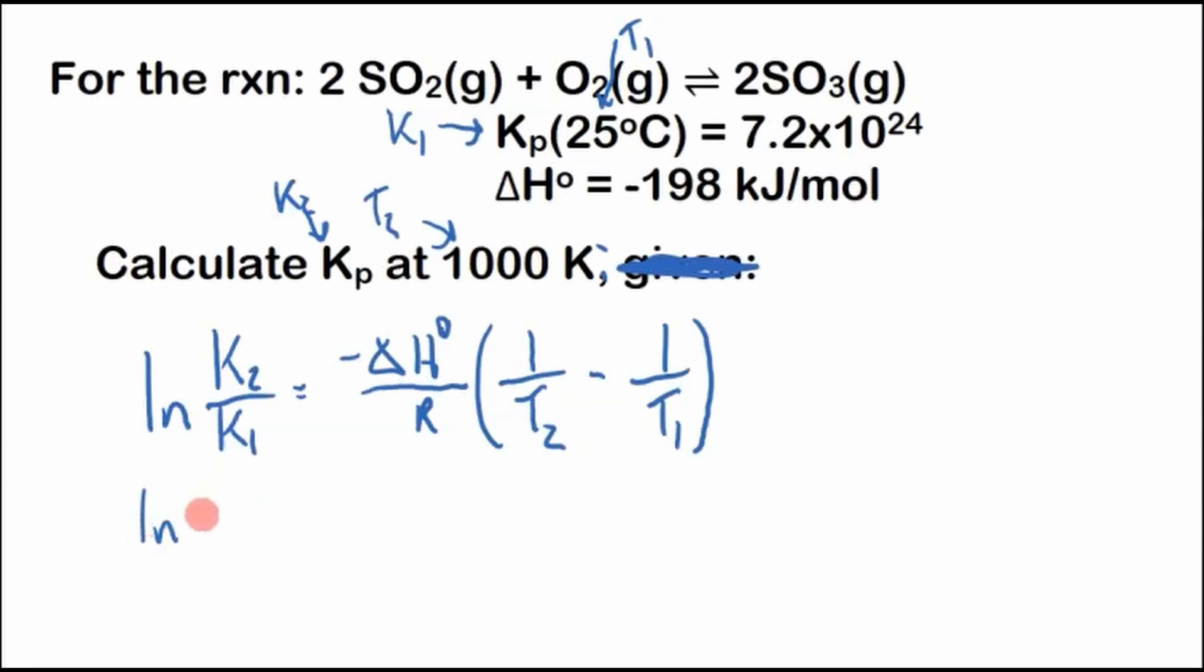So we'll have ln(K2 over 7.2 times 10^24) equals negative. Now we have negative 198 kilojoules. I'm thinking actively - this is in kilojoules and I know that R is in joules. If you're not sure, check your units of R, and the units have to match. So this is in kilojoules per mole. I'm going to times it by 10^3 to make it joules per mole.